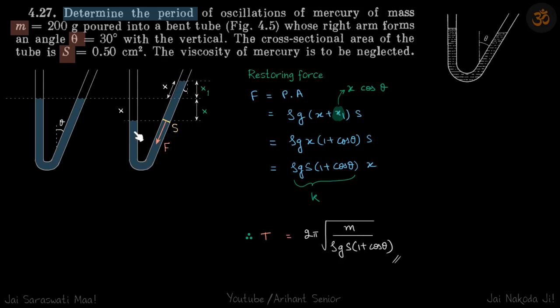So restoring force on this column of water will be because of this pressure increase due to the rise in water. So what is the force on this column of liquid? That will be the pressure into area. So let's say excess pressure into area, so we are neglecting P naught. So excess pressure will be rho G X1 plus X and area will be this cross-sectional area which is given to us.